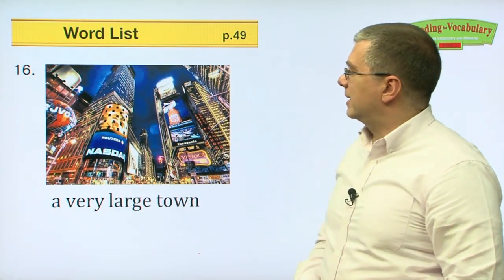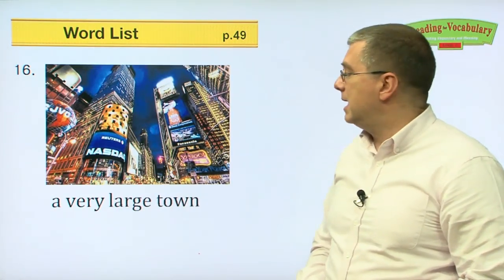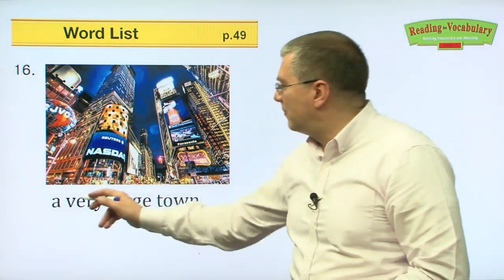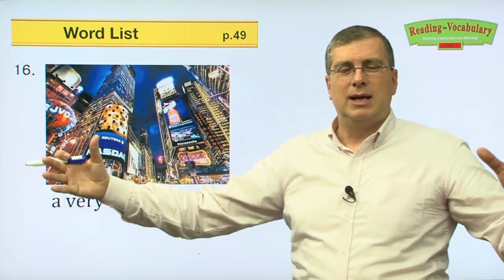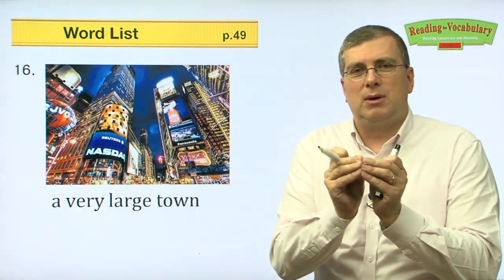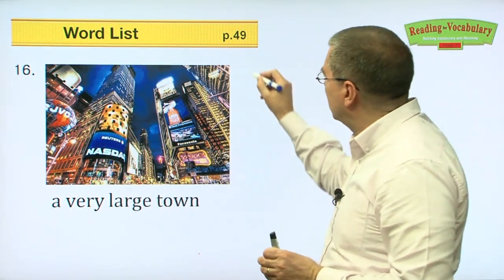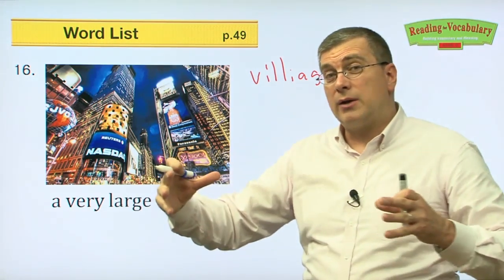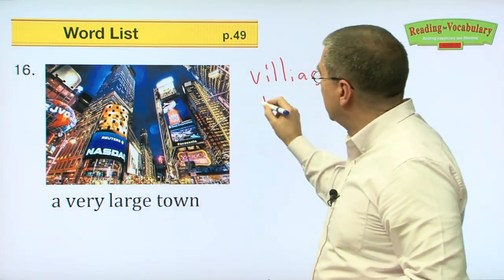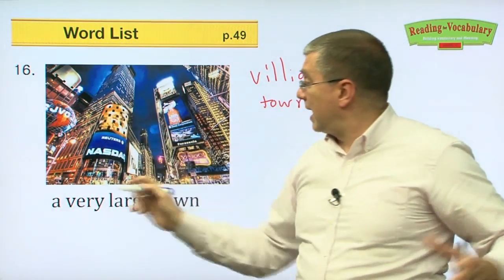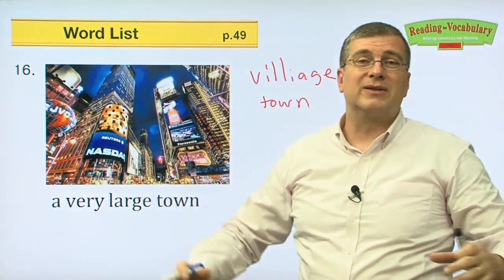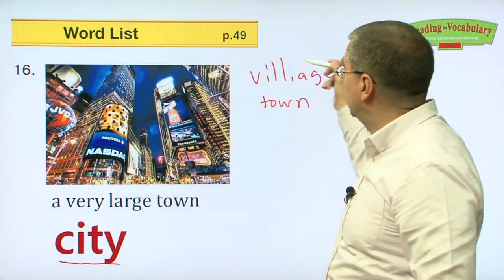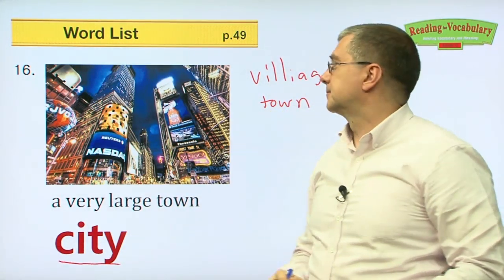Number sixteen. This looks like downtown in a very large town. If there are just a few people living together with just a few houses, we say that's a village. A few more houses and buildings — we can say it's a town. But with huge buildings, very tall buildings, and millions of people living together, we say that is a city. So: village, town, city.